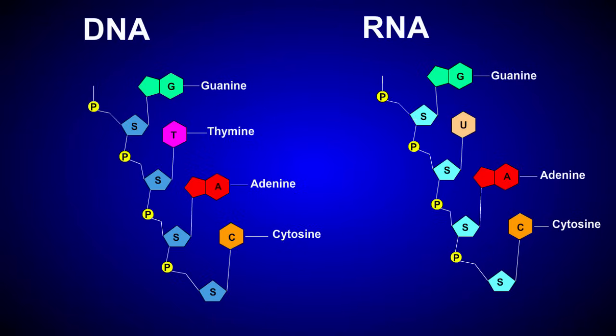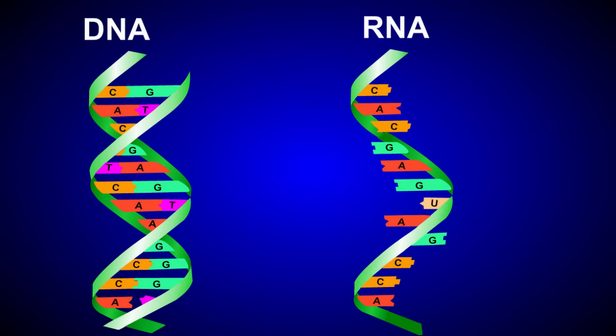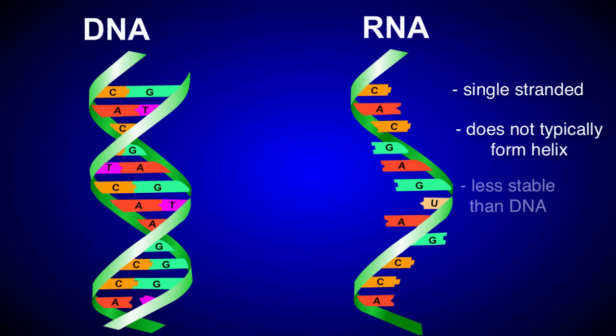RNA differs from DNA in that it contains the sugar ribose instead of deoxyribose, and the nitrogenous base uracil instead of thymine. Also, RNA is usually single-stranded and does not typically form a helix. Because of this, it is less stable than DNA and is usually more temporary.